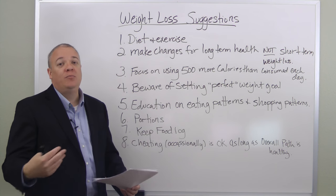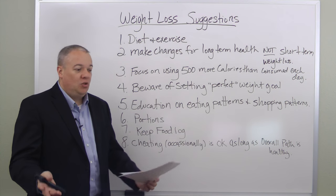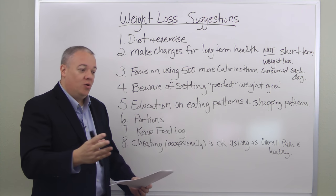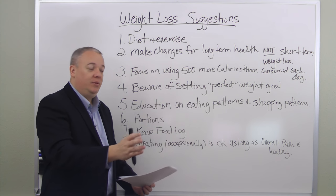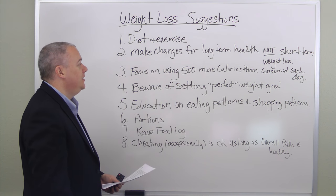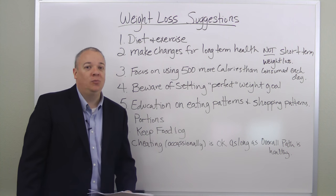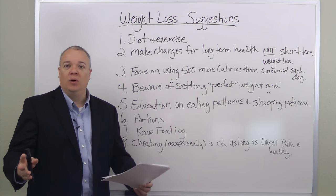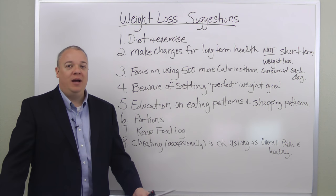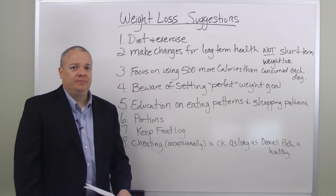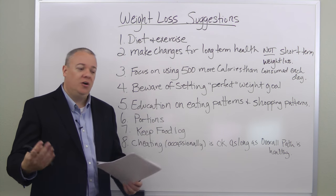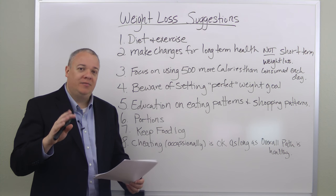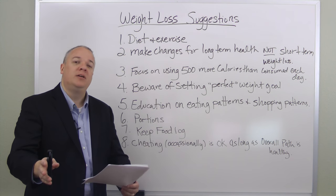Next, help them do something measurable: burn 500 more calories a day than they consume. If they're on a 2,000 calorie-a-day diet, help them burn 2,500 calories so that each day they're losing a little more weight. Also, beware of setting a perfect weight goal — this is dangerous because it's not long-term health. Once they reach that magic number, they may quit all the changes they've made. There is no perfect weight; it's about health, not a number on the scale.